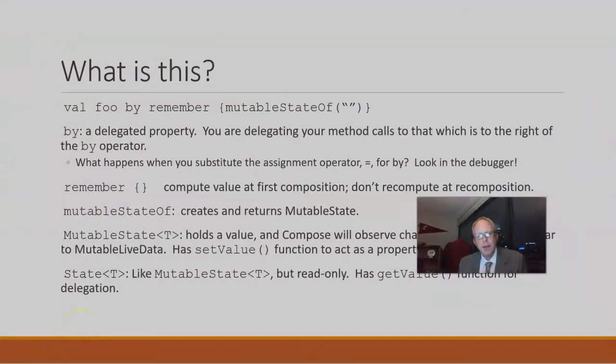By is an important keyword in Kotlin. Don't confuse it with the assignment operator, the equals operator, because you'll get something very different — I'll show the effect of that in the IDE a little bit later in this video. Essentially, what by says is this is a delegated property, so you're delegating your method calls to that which is to the right of the by operator. You're using the variable to the left of the operator, and as you're calling functions on that variable, it's actually delegating to what's on the right. That's how we're able to effectively use a mutable state to inform our composables that something has changed and they need to be recomposed.